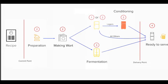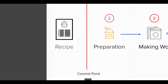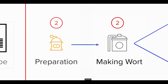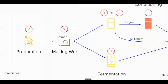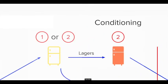Here we have our beer-making process and you can see there are a number of steps in this overall process. We start from the left-hand side with the recipe, which is just to the left of the commit point, before we start the preparation and making the work. Then later on we go on to fermentation and conditioning, and eventually the delivery of the beer.